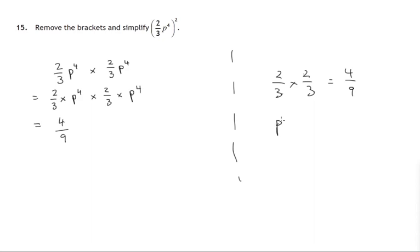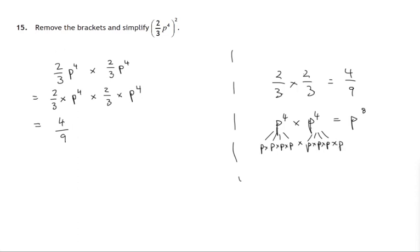And then the other part of this is multiplying p to the power of 4 by p to the power of 4. Multiplying two powers, you add the powers together to get p to the power of 8. After all, this is four copies of p multiplied all together, as is this — four copies of p all multiplied together, so there are eight copies all together. So p to the power of 8. The short way of writing that would be four-ninths p to the power of 8.